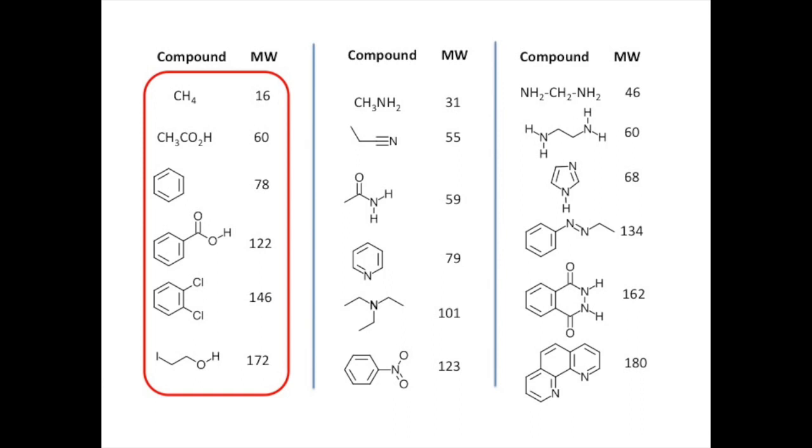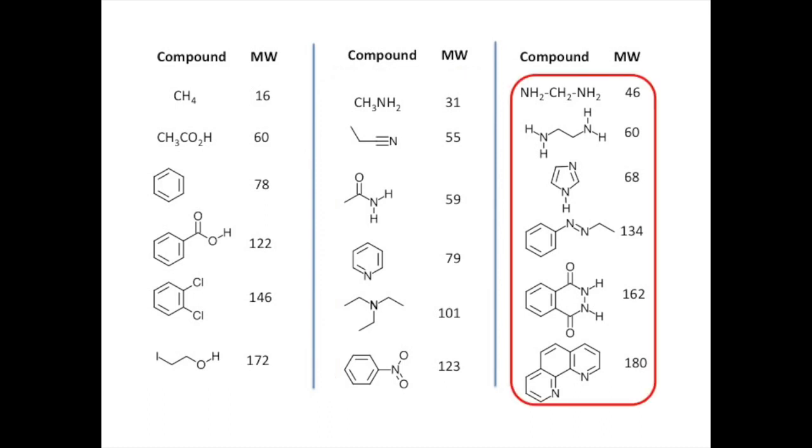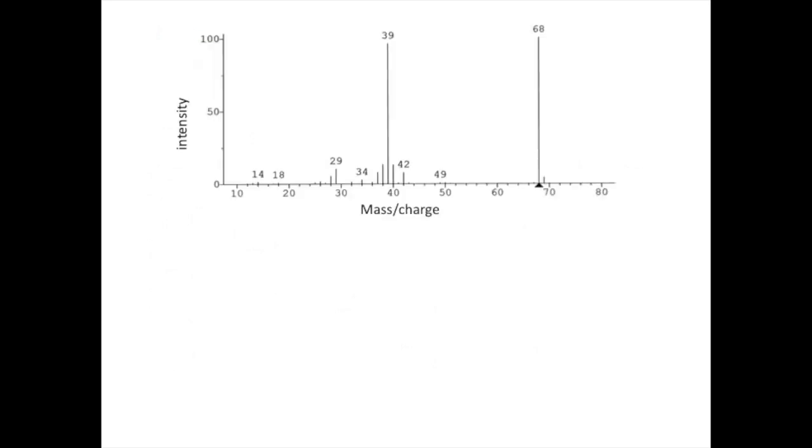All of the compounds in the first column have an even molecular weight and contain no nitrogen atoms. All of the compounds in the middle column contain one nitrogen atom and exhibit an odd molecular weight. All of the compounds in the right have an even number of nitrogens and once again exhibit an even molecular weight. So here is an important principle. An odd molecular weight indicates an odd number of nitrogen atoms. Let's apply these ideas to a few example spectra and generate reasonable molecular formula for each.